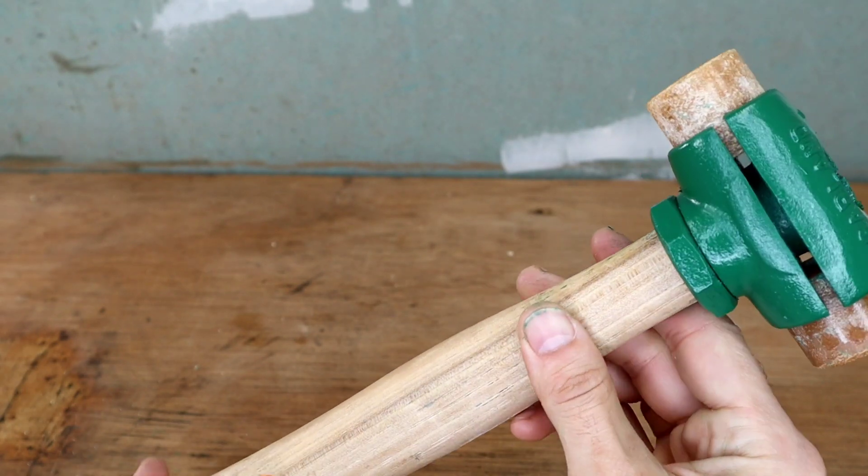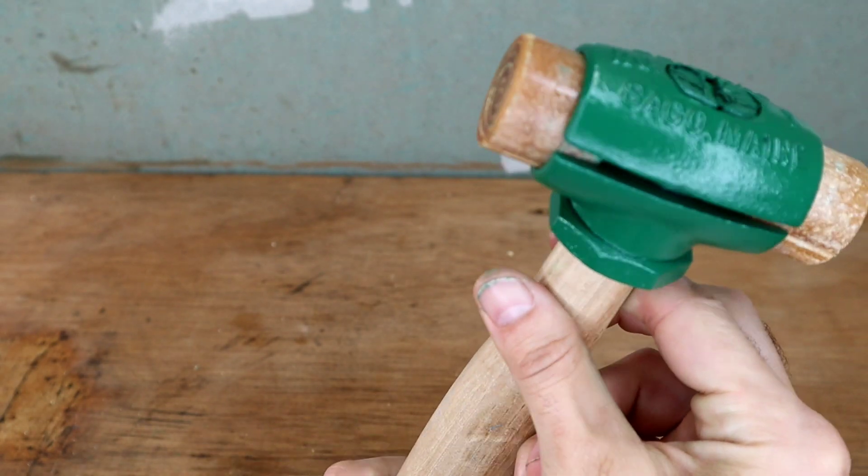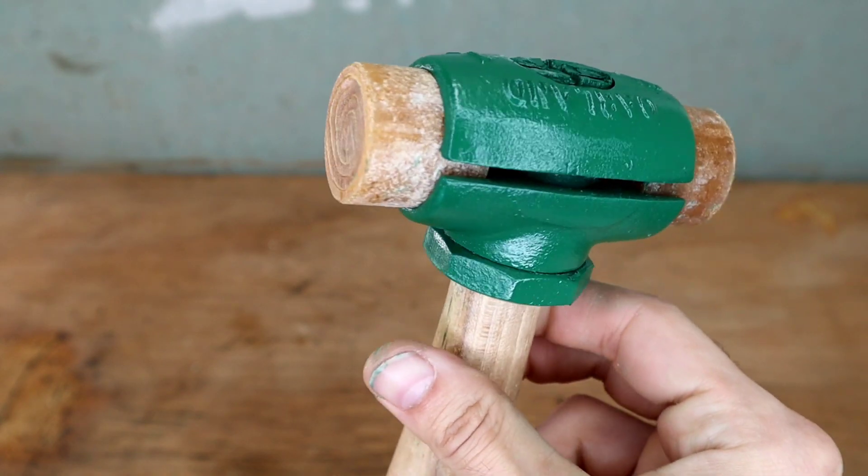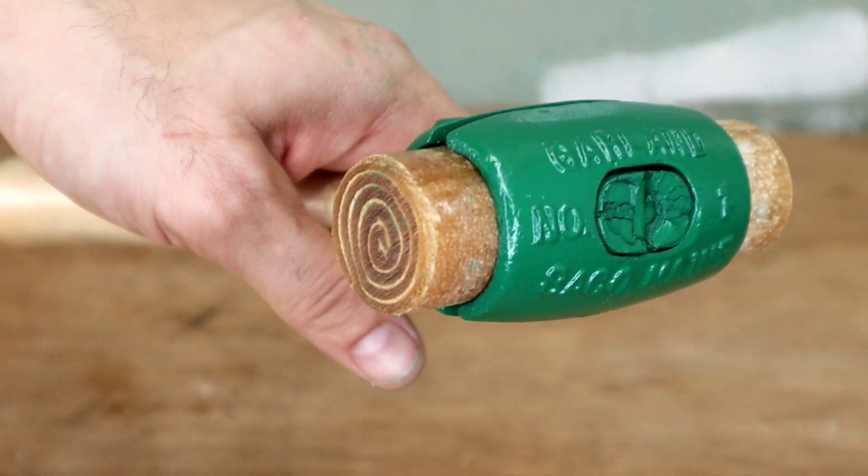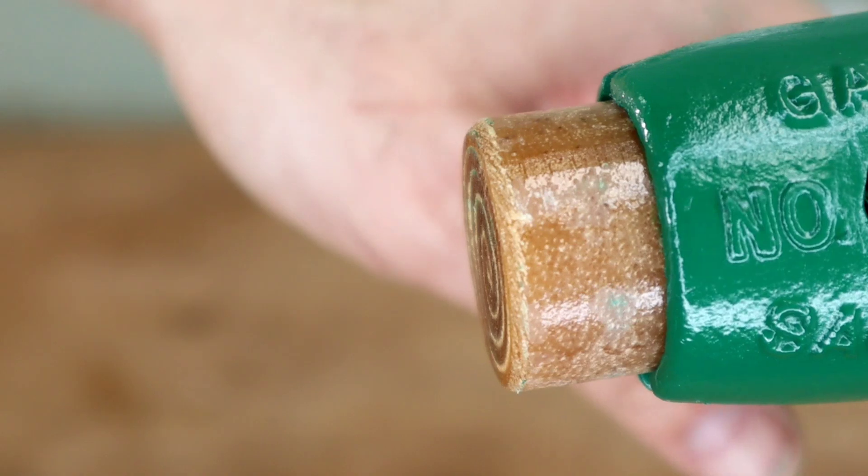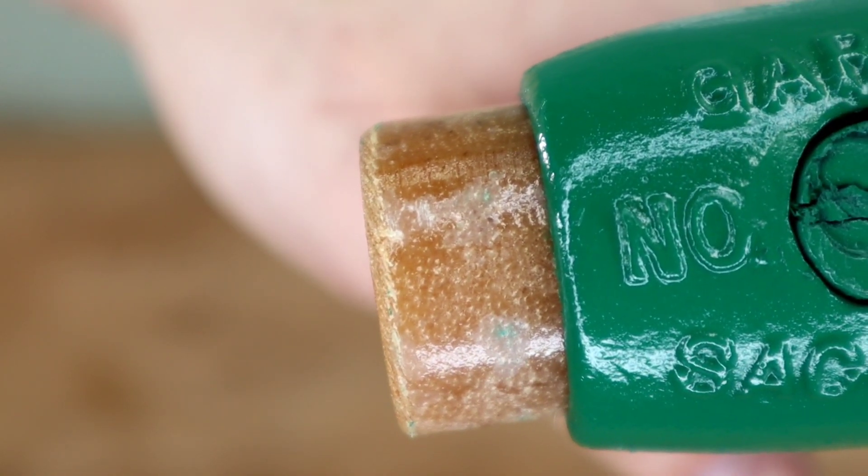We installed a new handle, filed the threads for the nut, made and installed a new roll pin, fixed the missing parts of the end, smoothed out any of the nicks and scratches in the jaws, and gave it a fresh new coat of paint.